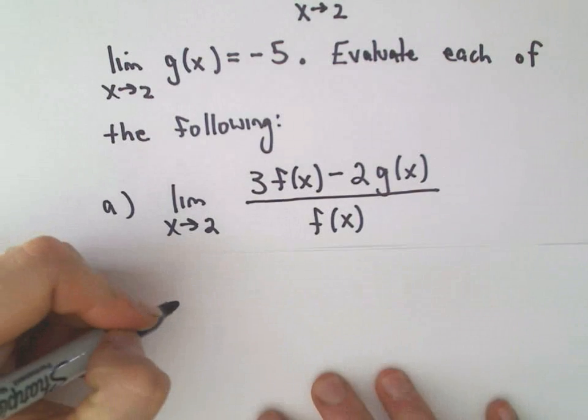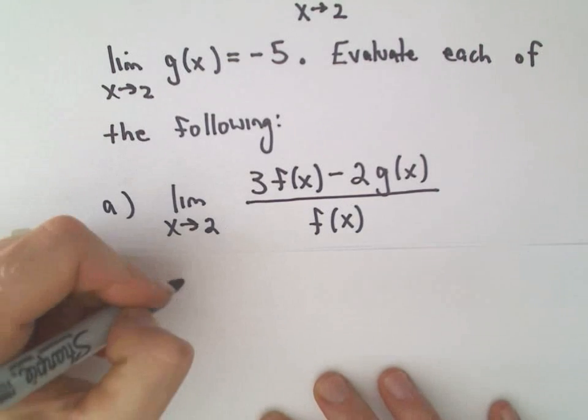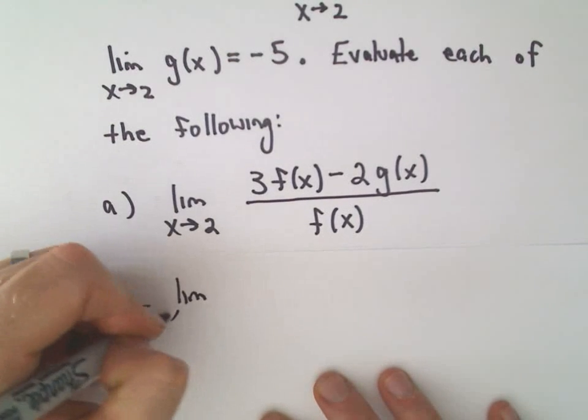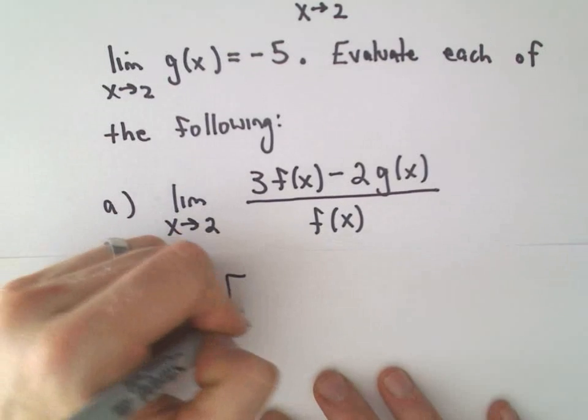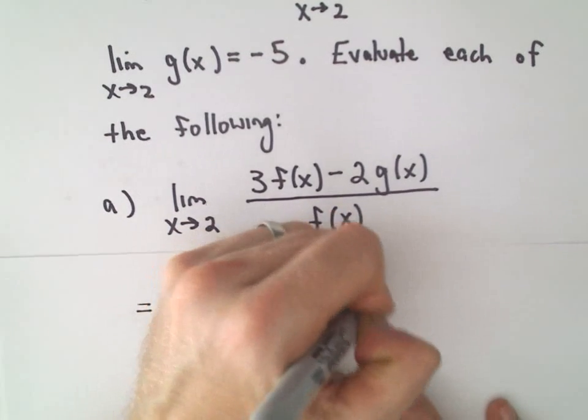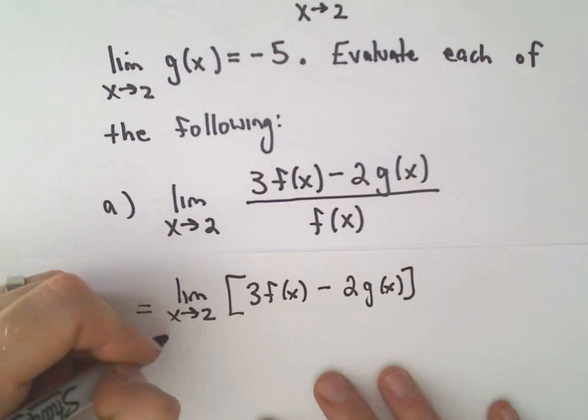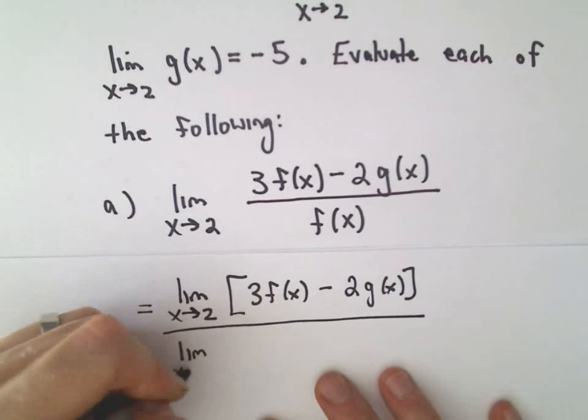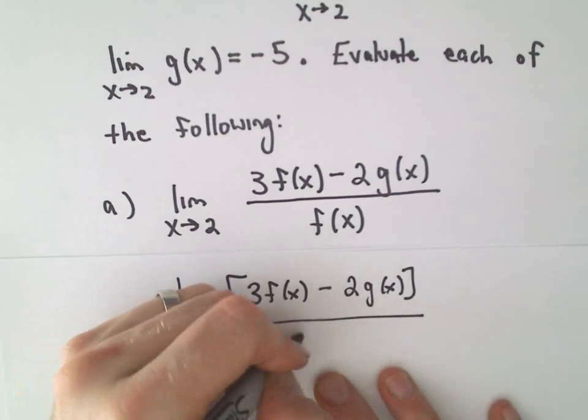For the limit laws, maybe we'll go through this one in bits and pieces. If you have a limit of a fraction, it basically says you can take the limit of the numerator over the limit as x approaches 2 of the denominator.